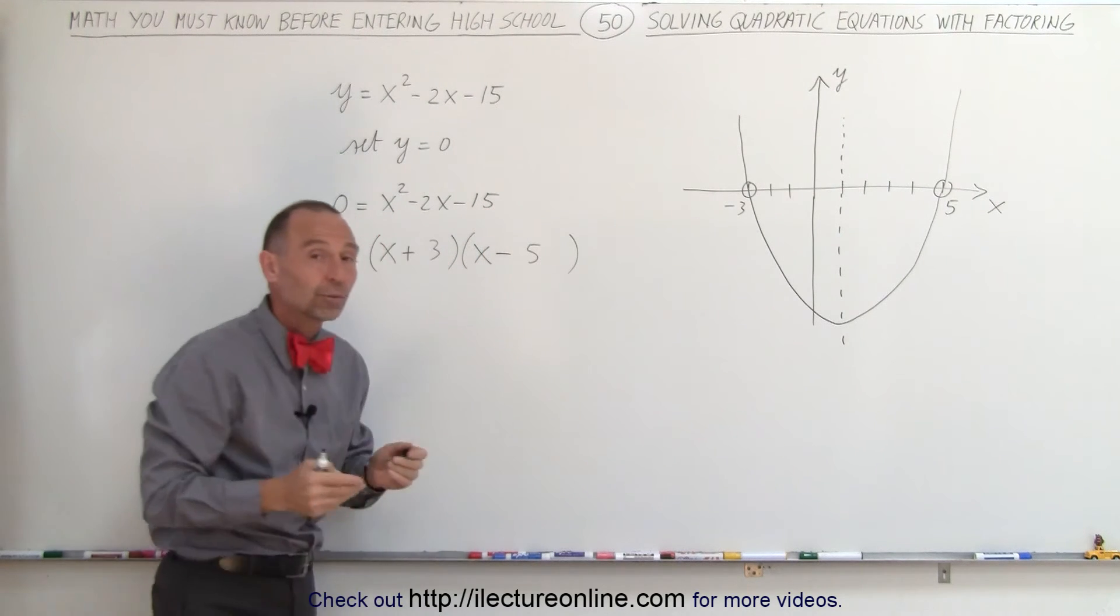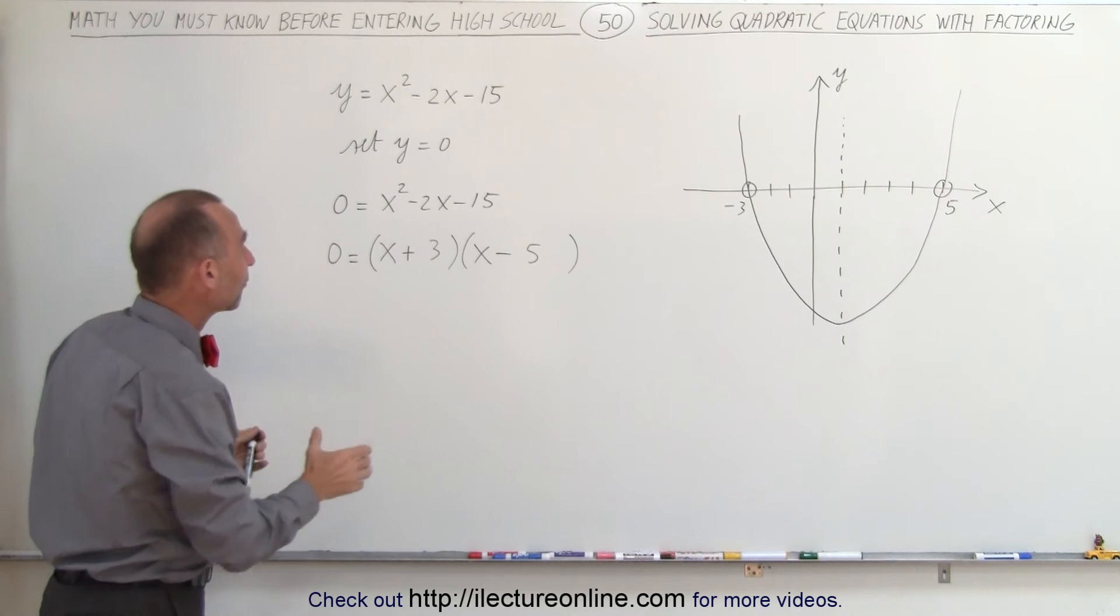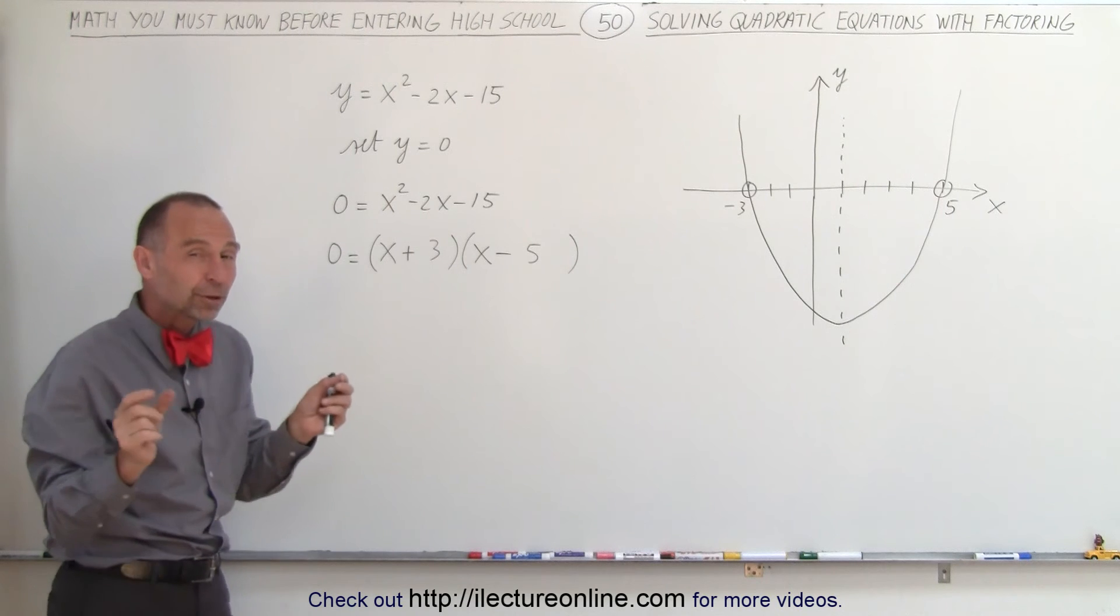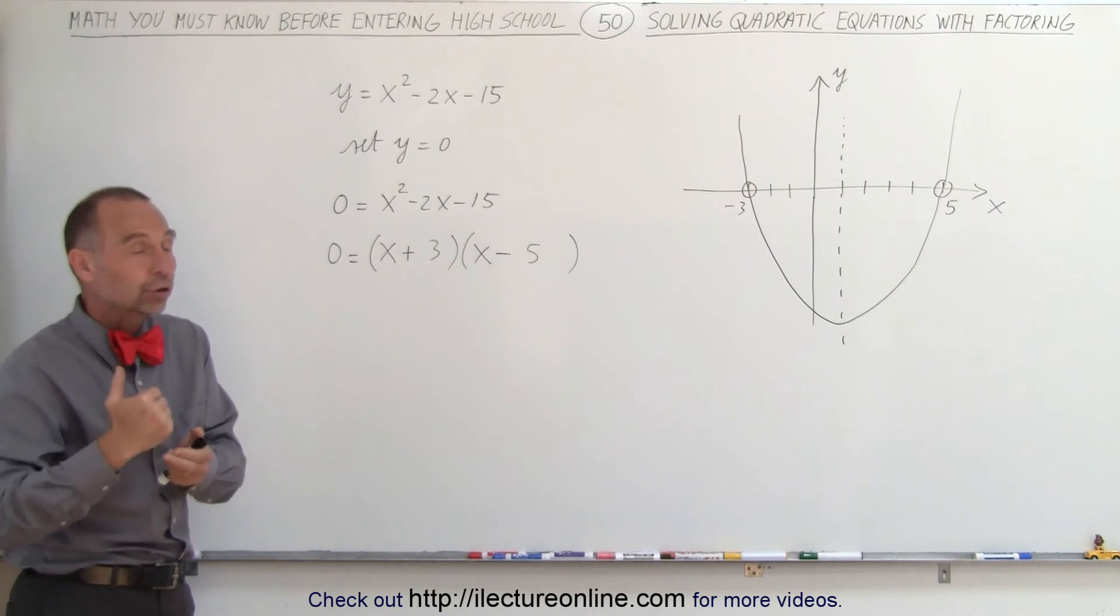So here what we did was factor just like we did in the previous videos, and now we have two binomials multiplied together and they equal 0. Well, whenever you multiply two things together and you get 0, that means either one or the other should be 0.